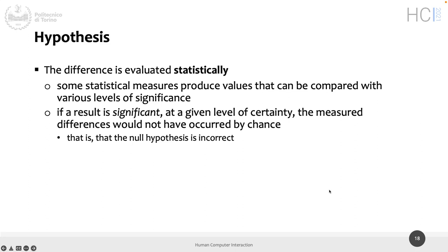The reason we work with the null hypothesis is that 'no difference' can be evaluated statistically. We will have some statistical measure that produces results according to some level of significance. We can say at a certain point that the result is statistically significant — that the measured difference cannot have occurred by chance. If we redo the experiment, we will get comparable results: for instance, 95% of the time we will see the same difference.